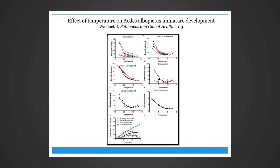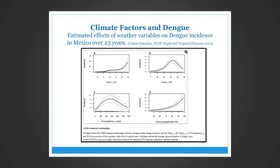This slide depicts the estimated effects of weather variables — minimum temperature, maximum temperature, precipitation — and the non-climate variable of access to piped water, on dengue incidence over the past 23 years in Mexico. There is a direct relationship between minimum temperature and increased dengue incidence, but a threshold maximum temperature exists above which dengue incidence decreases. The relationship with precipitation is less clear. Human factors are also very important: access to piped water means water containers, which are where mosquitoes like to breed.